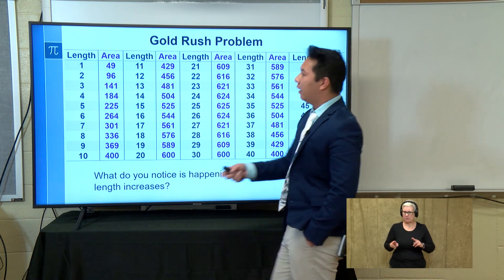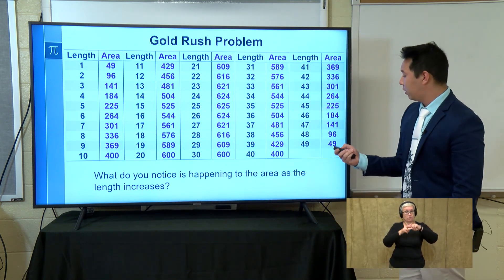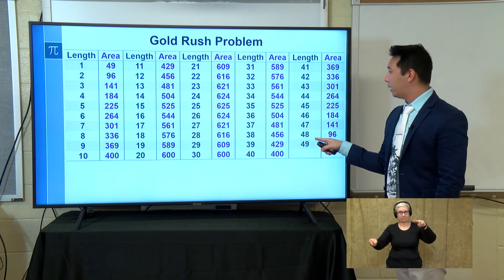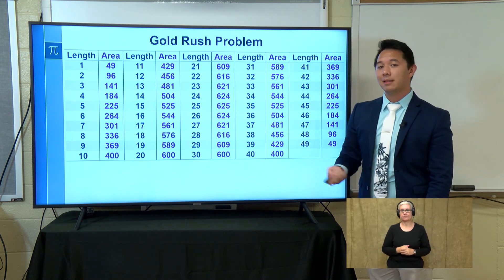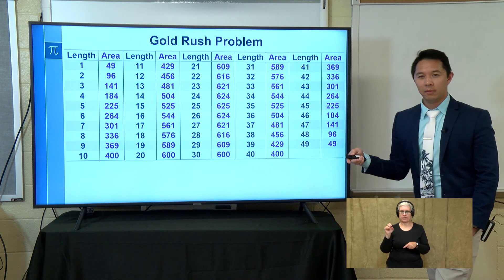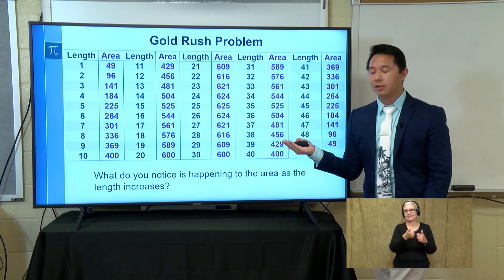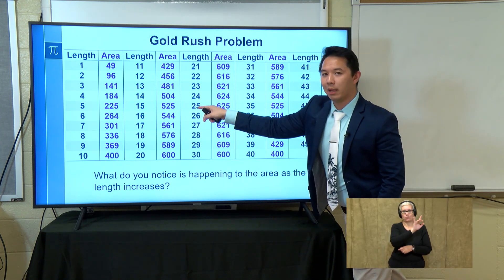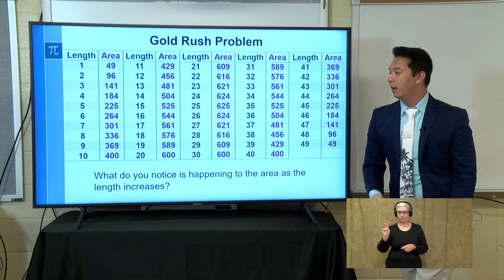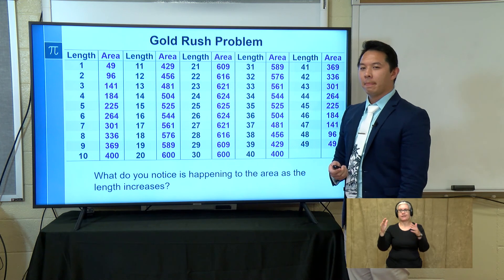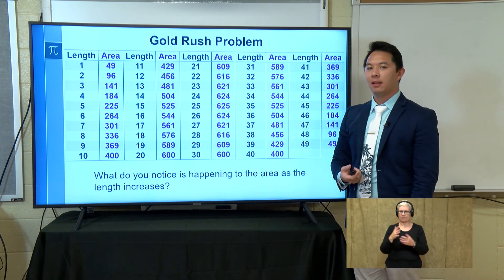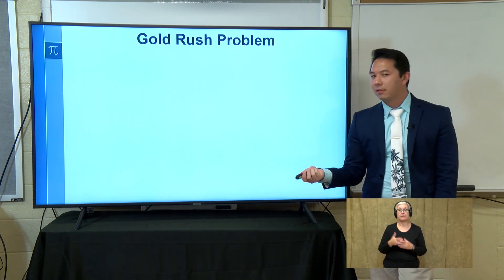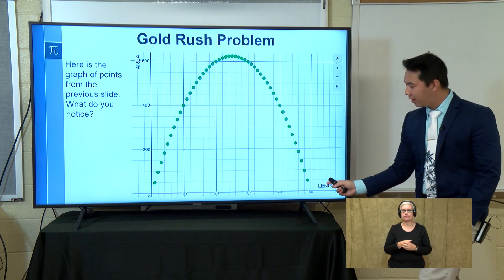As I continue to increase my length, that also decreases the width. When my length reaches 49, my width is just 1 meter — the same dimensions as the start, so the area is identical. Since I've listed every whole-number combination for length and width, the length of 25 meters and therefore the width of 25 meters gives the largest possible area of 625 square meters.